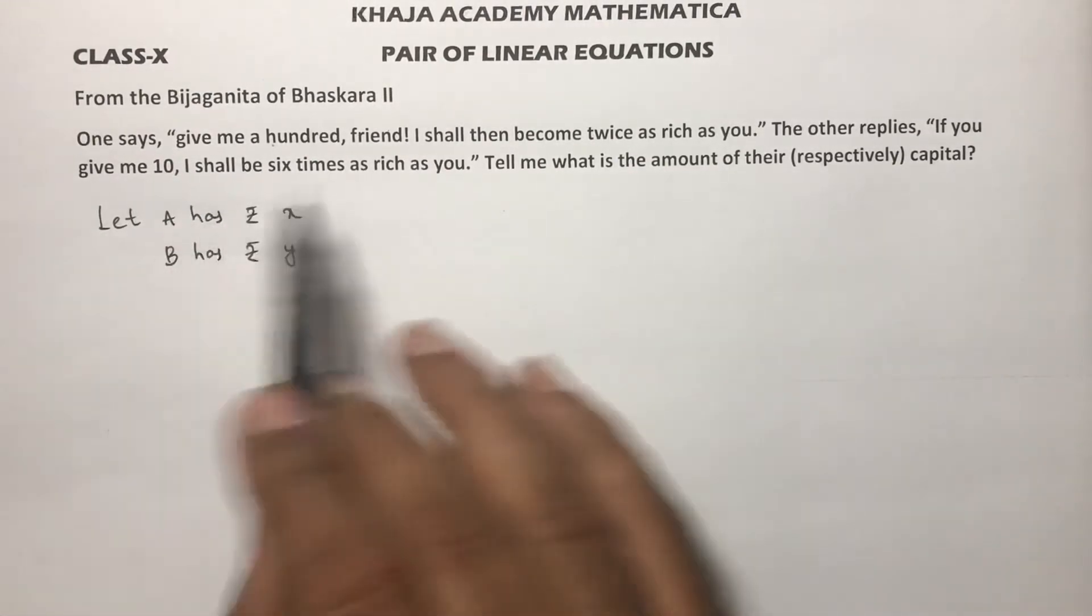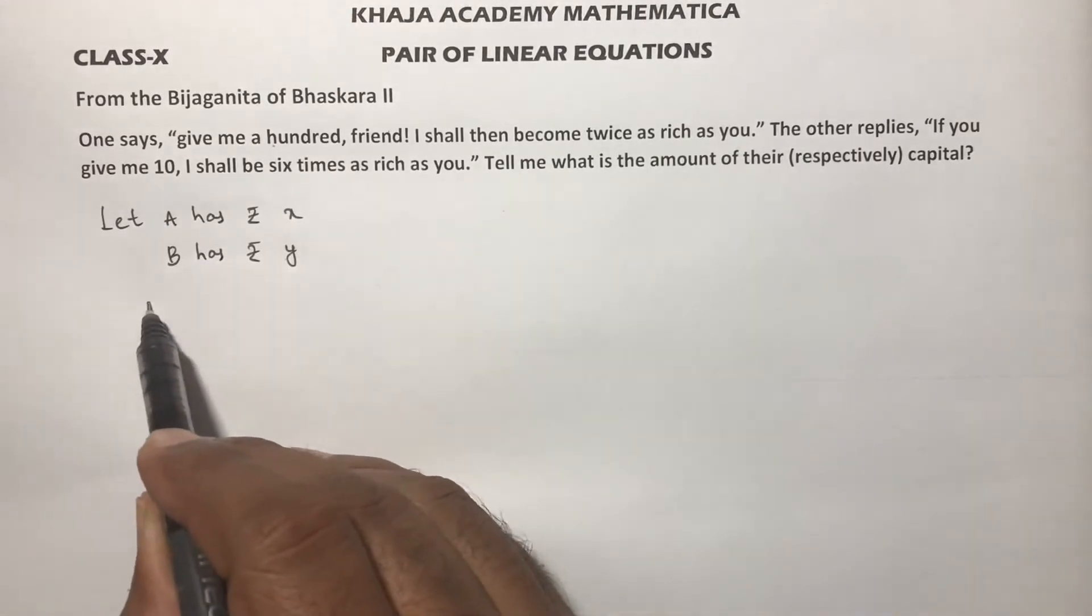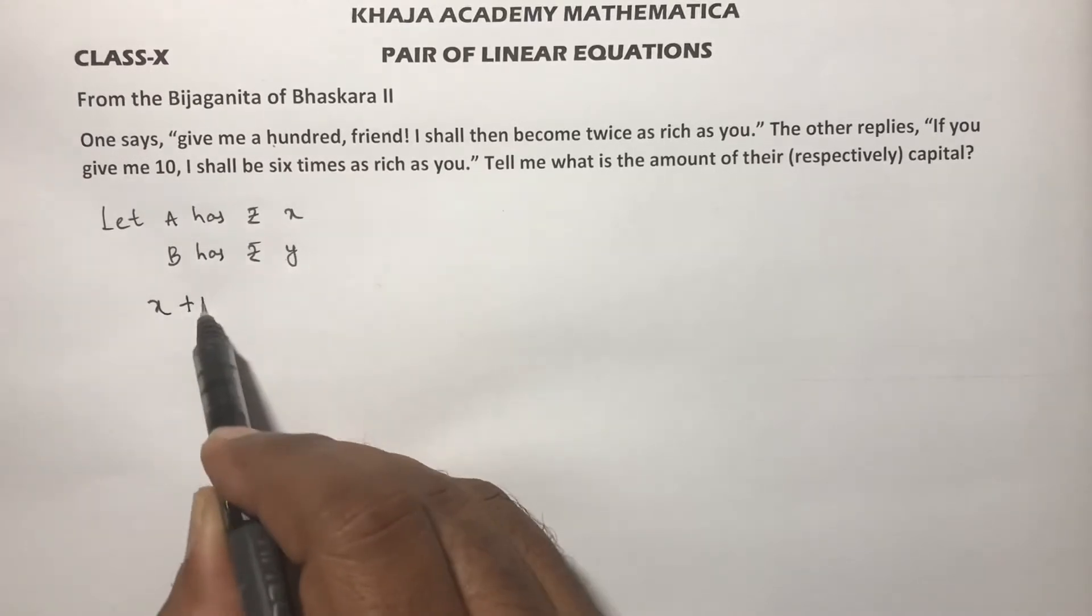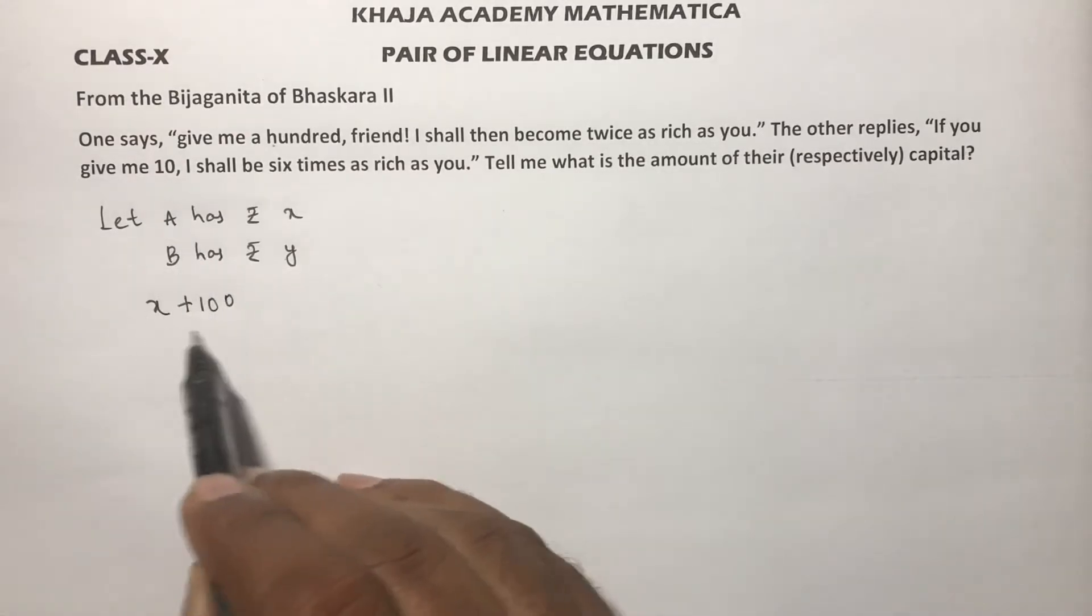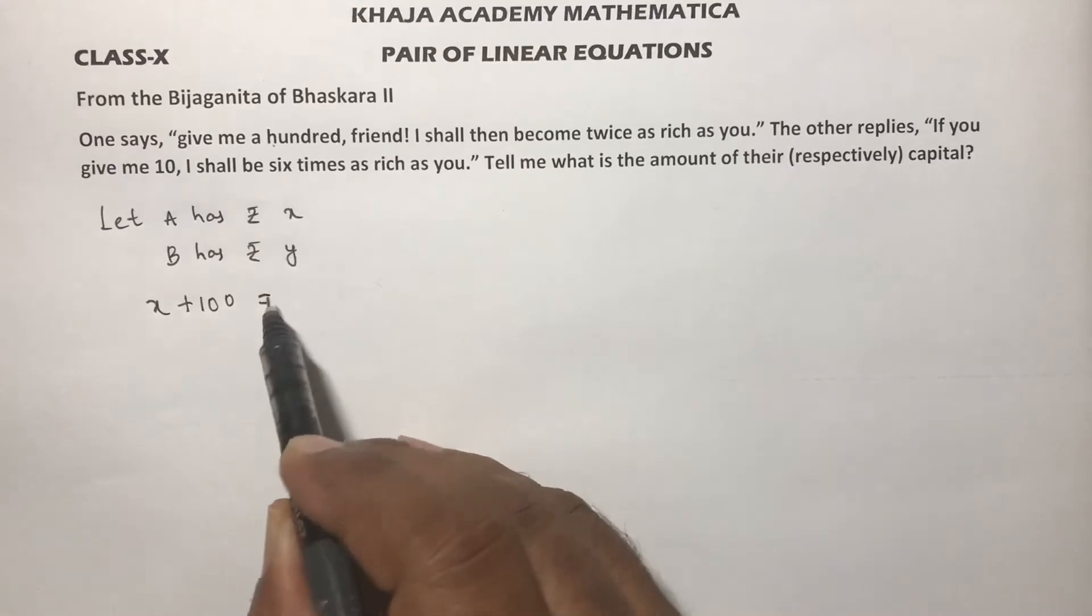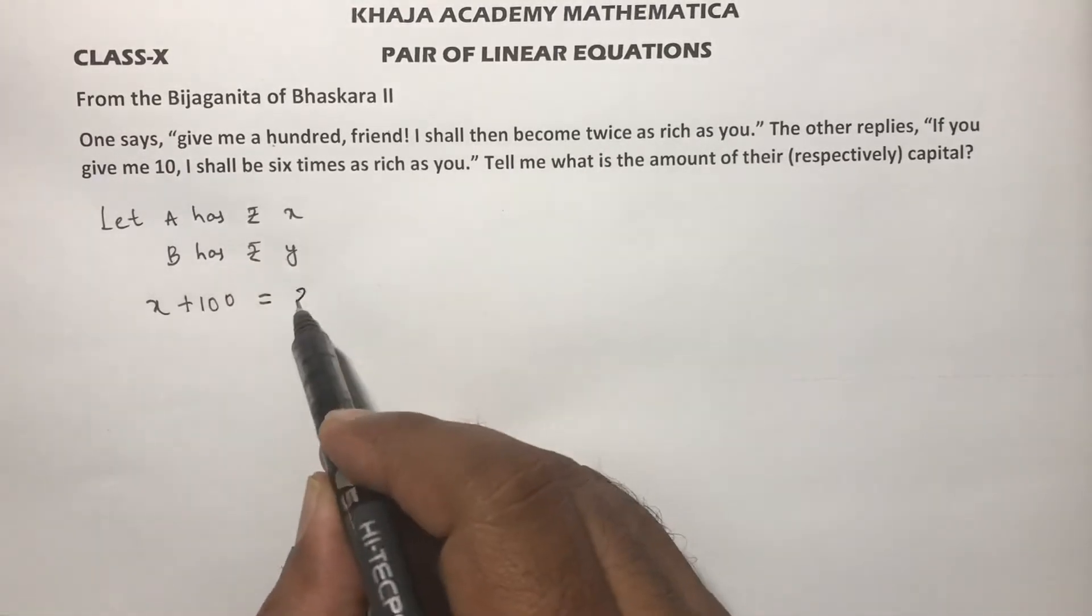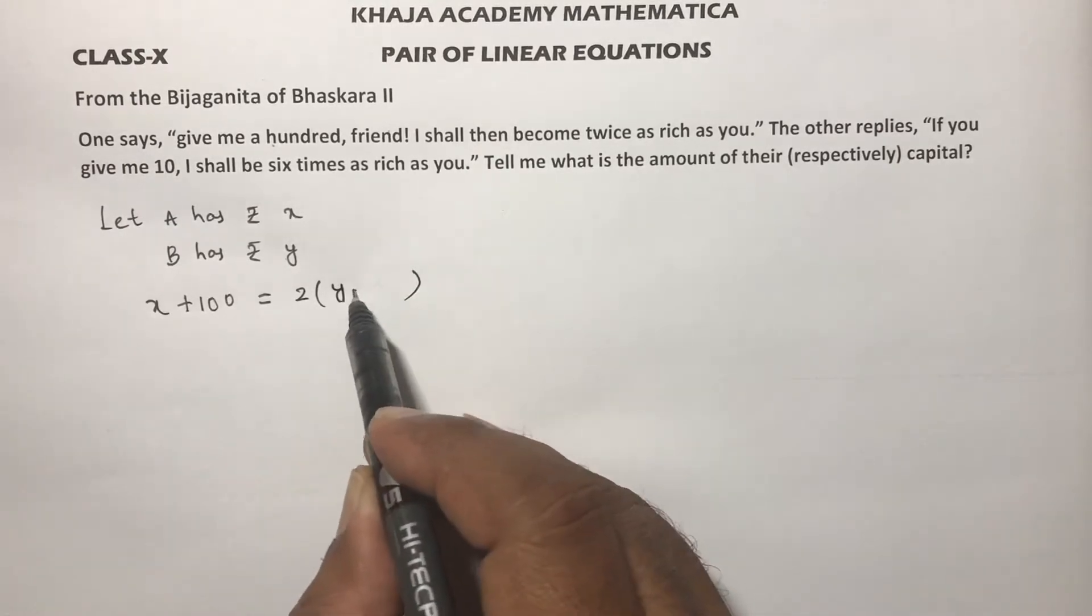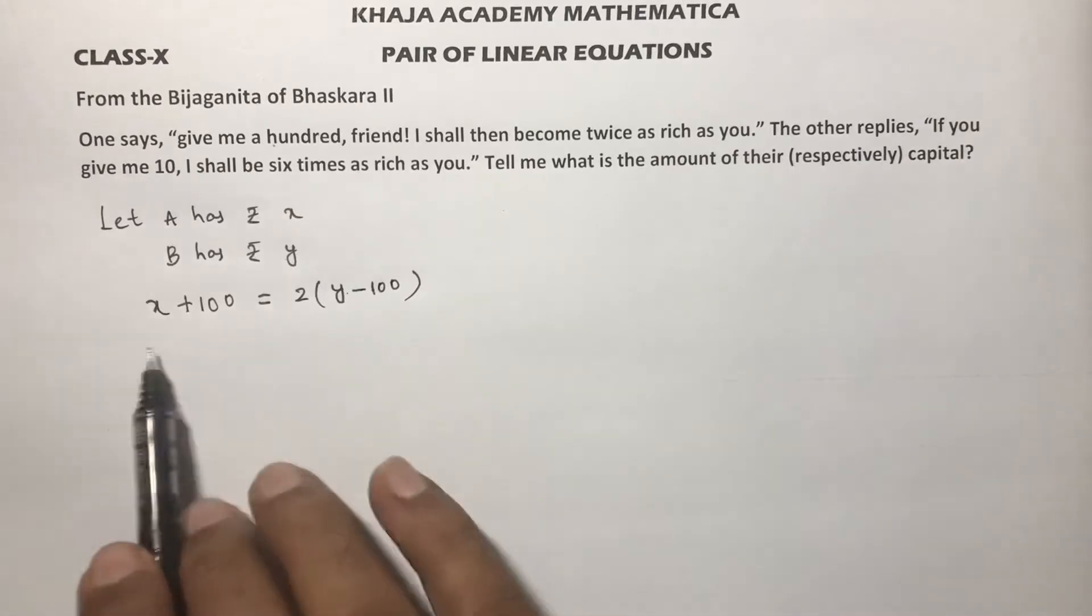One says, suppose the first one A says to B, if you give me 100, suppose B will give 100 to A, then A will have total amount x plus 100. Since A is getting 100 from B, then give me 100 I shall become twice as rich as you. Now in B's account it will be y minus 100 because he gave 100 to A. This is one equation.